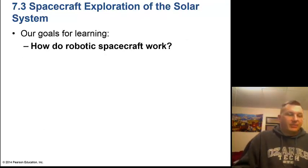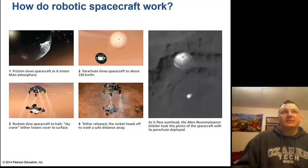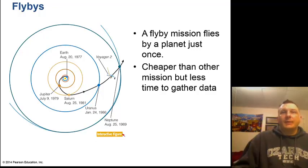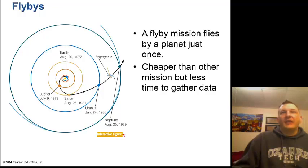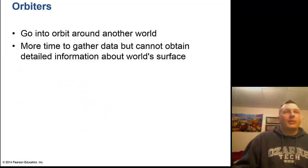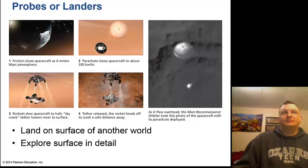We explore the solar system with robotic spacecraft. One way to conserve fuel for distant missions is flybys. It costs ten thousand dollars to launch one pound of anything into space, so we use gravitational assists — swinging the spacecraft past a planet so its gravity speeds and slingshots the craft further into space. We also use orbiters, which go into orbit around another world for more observation time, and probes or landers that go to the surface to explore in detail.